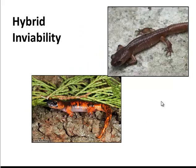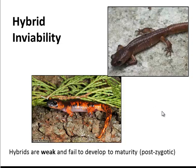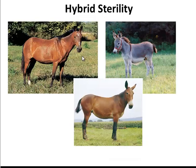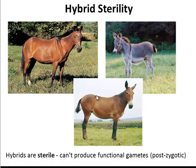Now, quickly, two different postzygotic barriers. In the case of these salamanders, they are able to reproduce with each other and produce offspring, but the offspring don't live very long — they generally die before they can reproduce, so they aren't fit and are ultimately selected against. In the case of a horse and a donkey, they can also reproduce and make a zygote, which does develop into a nice, healthy mule, but the mule itself is sterile. Because it can't produce offspring, it also has low fitness, and reproductive isolation has occurred.